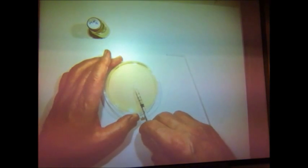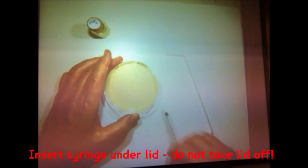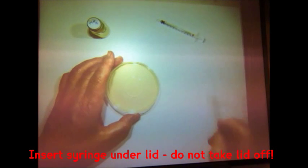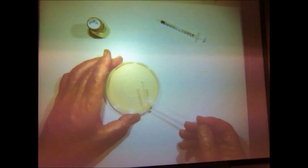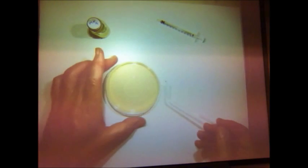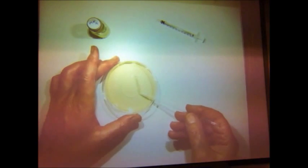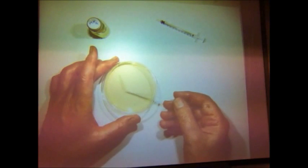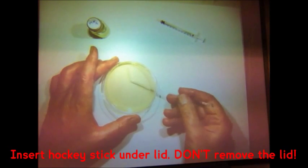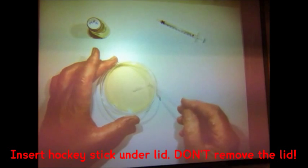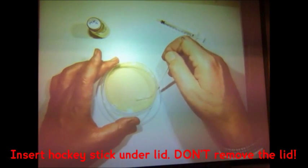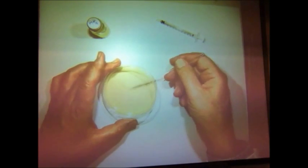What I'm going to do is peep underneath the lid, without lifting the lid off, onto the surface of the agar. That syringe will go into the discard bin shortly, and then I'm going to reach underneath with the hockey stick and very gently spread it over the surface of the agar.